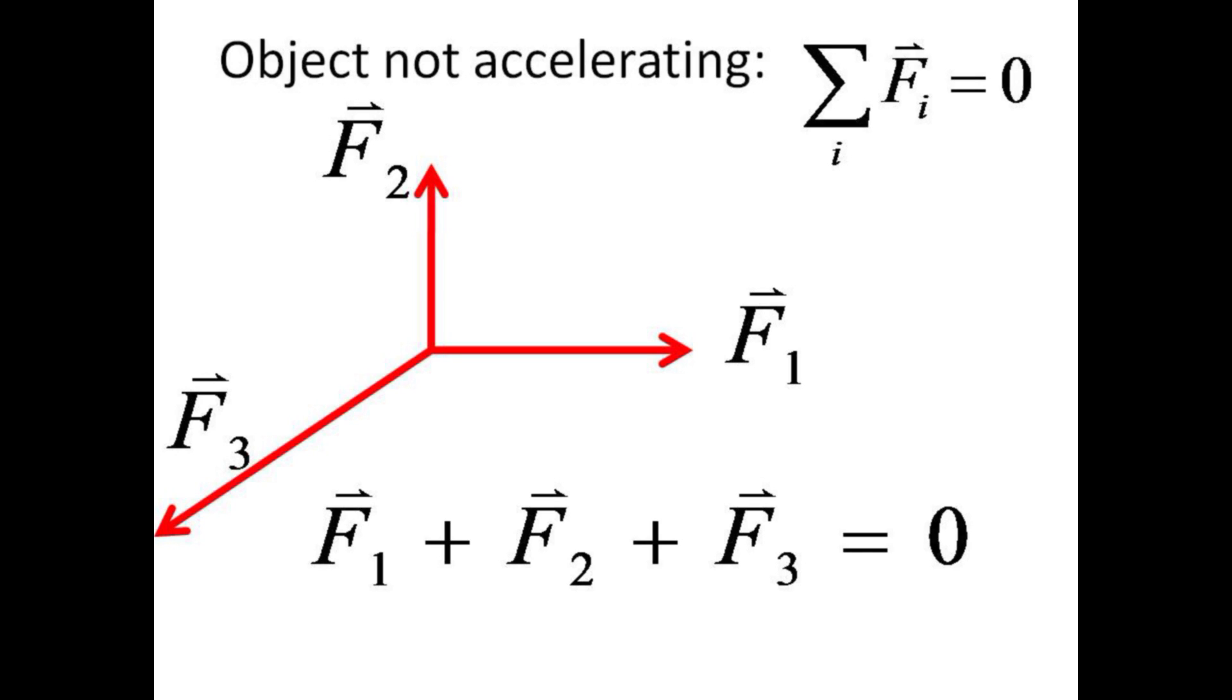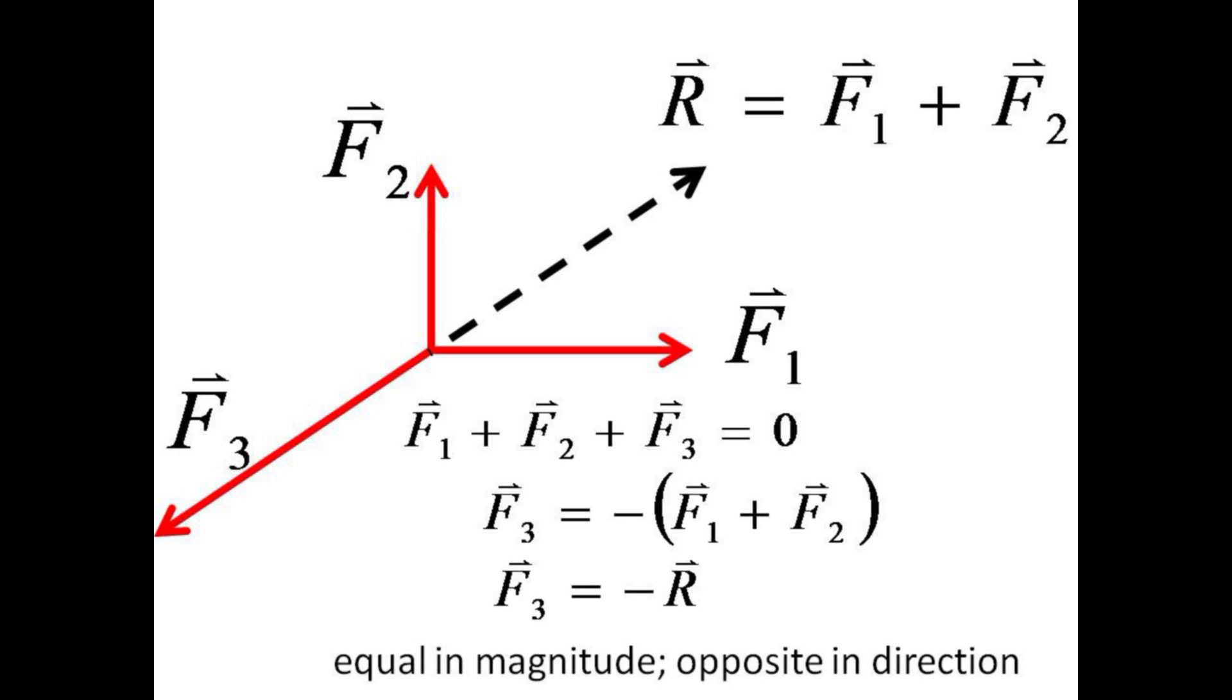With three forces, F1 plus F2 plus F3 should sum as vectors to zero. Another way to think about it is that the third force must be equal in magnitude, but opposite in direction, to the resultant of the first two forces.